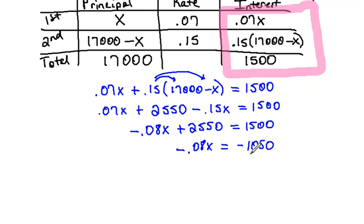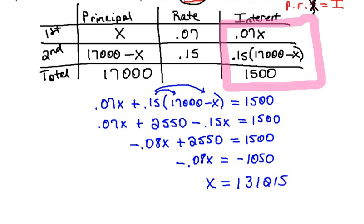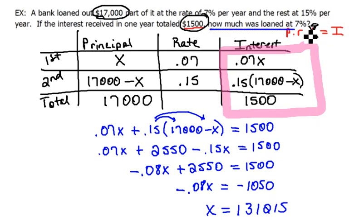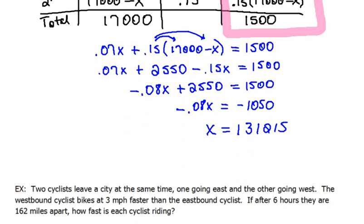And now we would divide both sides by the negative point oh eight to get X alone, and we would end up with thirteen thousand one hundred twenty-five. Now if you'll remember from our question here, it actually asked us how much was loaned at seven percent. Well, the seven percent we let that variable be X, so when we solved for X we end up with the actual answer that we needed.